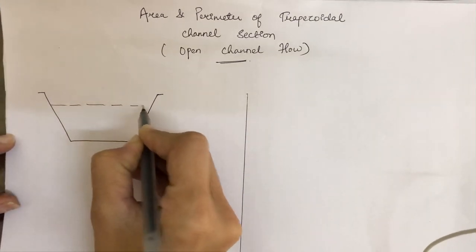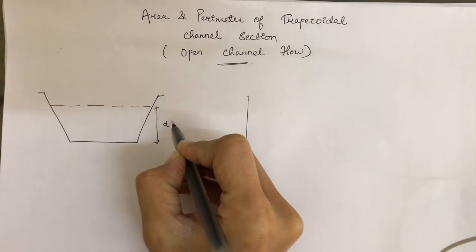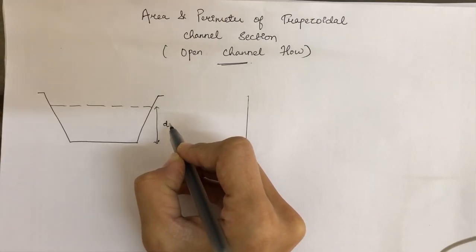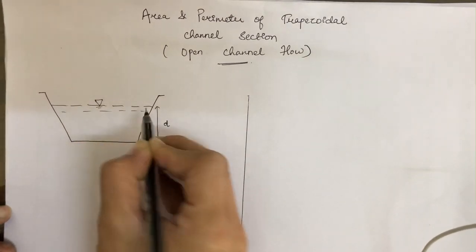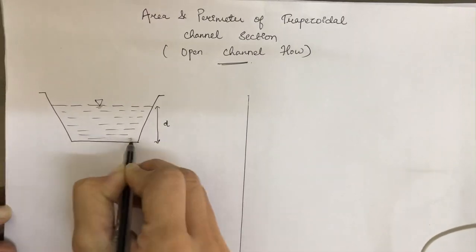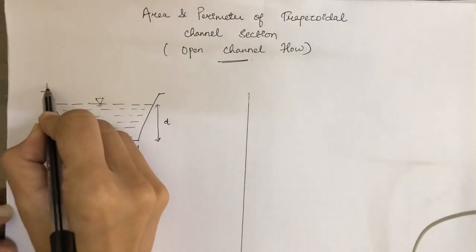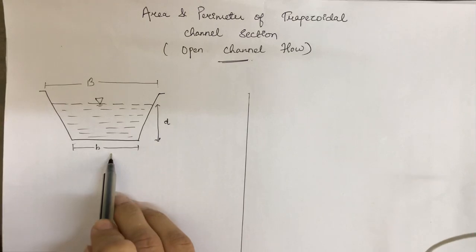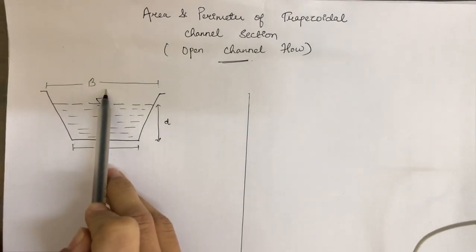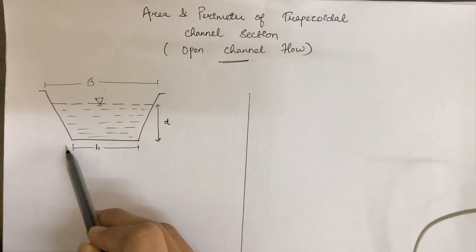Let the depth of water in the channel be represented by d — you can also use the symbol y, as some books use d while others use y to describe the depth of flow in an open channel. Let small b be the width of the channel at the bottom, and let capital B be the width at the top. The top width is somewhat more than the bottom width because of the side slopes.